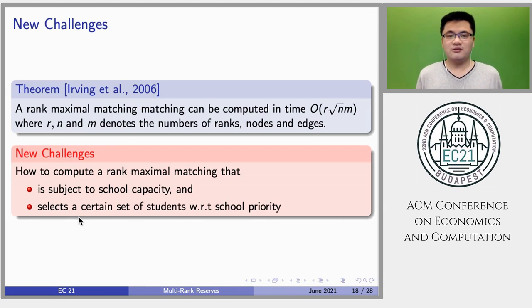There exists some work on how to compute a rank-maximal matching in polynomial time. However, this algorithm does not satisfy all these properties. We are interested in the problem of computing a rank-maximal matching with two more constraints. First, the size of the outcome should be no larger than the school capacity. Second, we need to select a certain size of students with respect to school priorities to satisfy the requirement of justified envy-freeness. The second condition makes our problem more challenging.